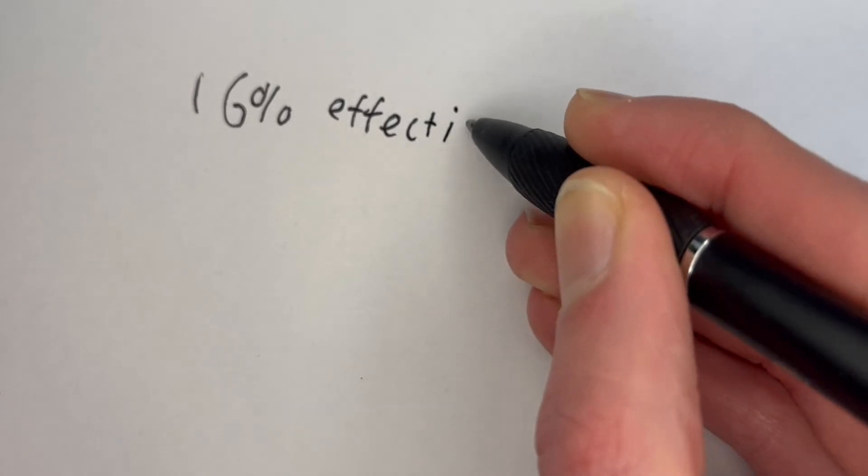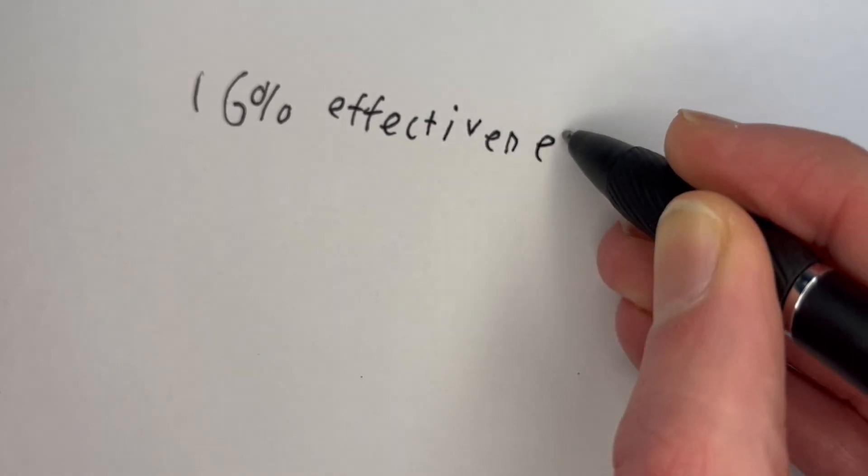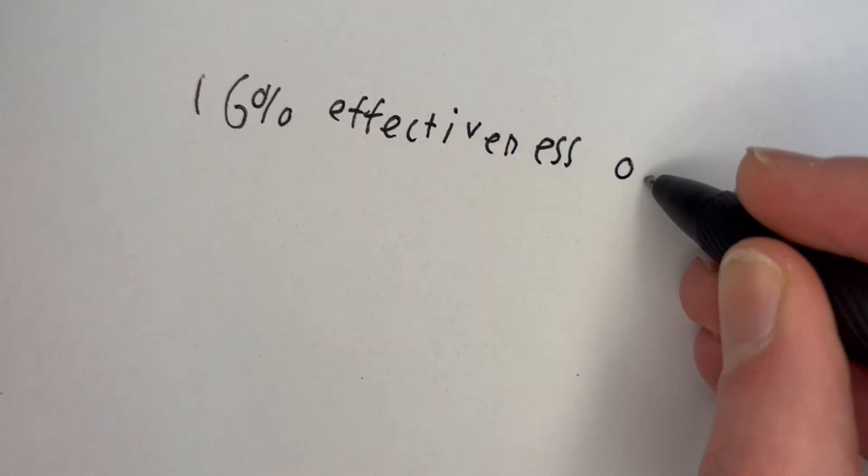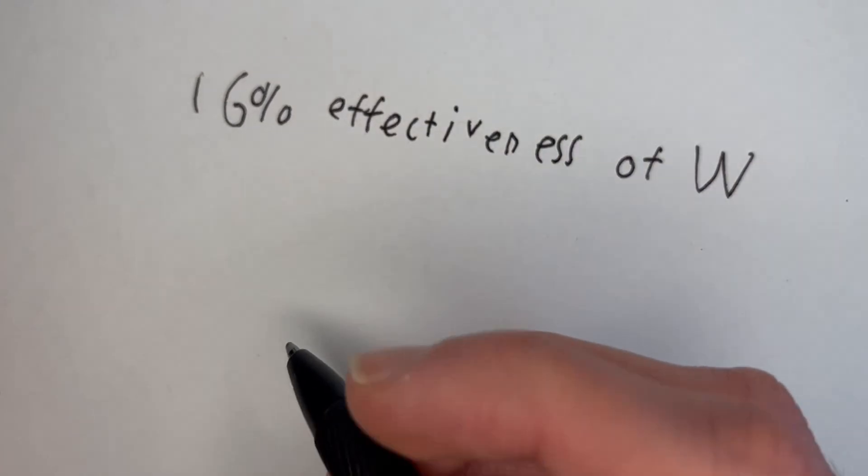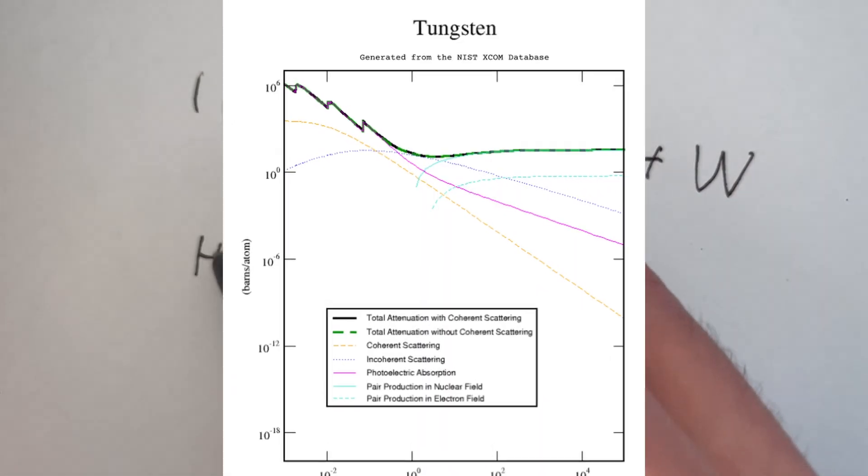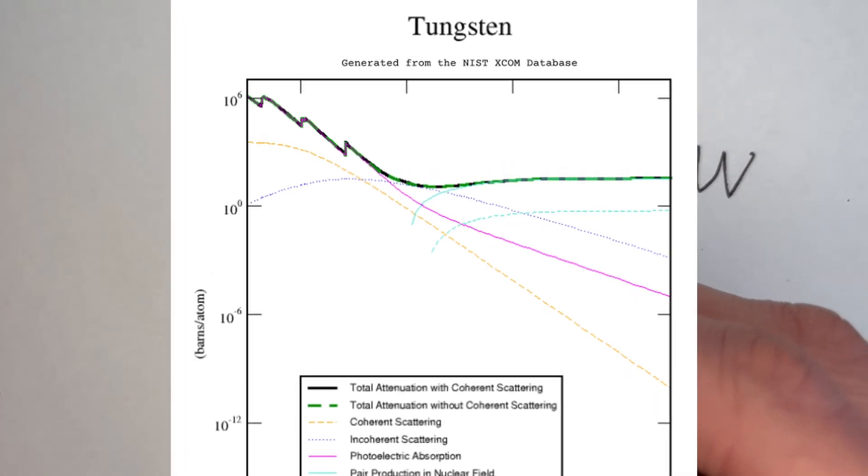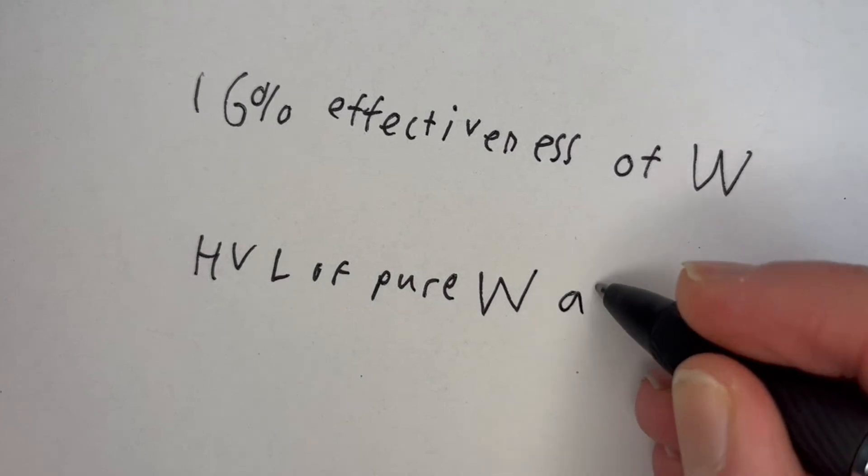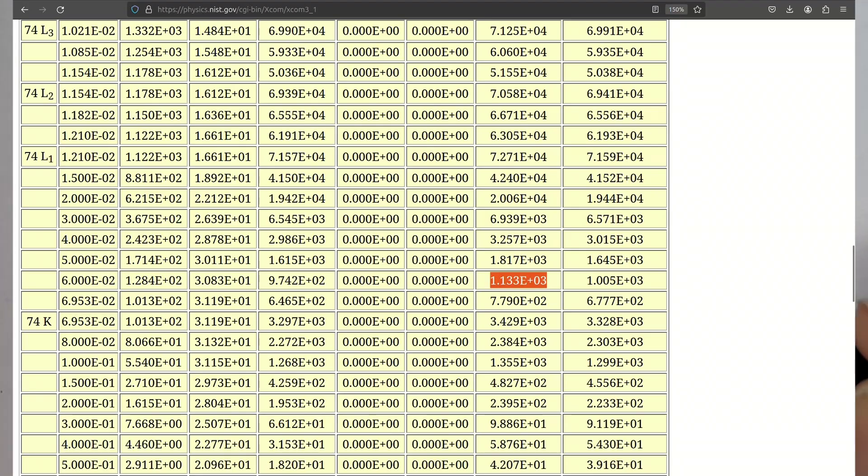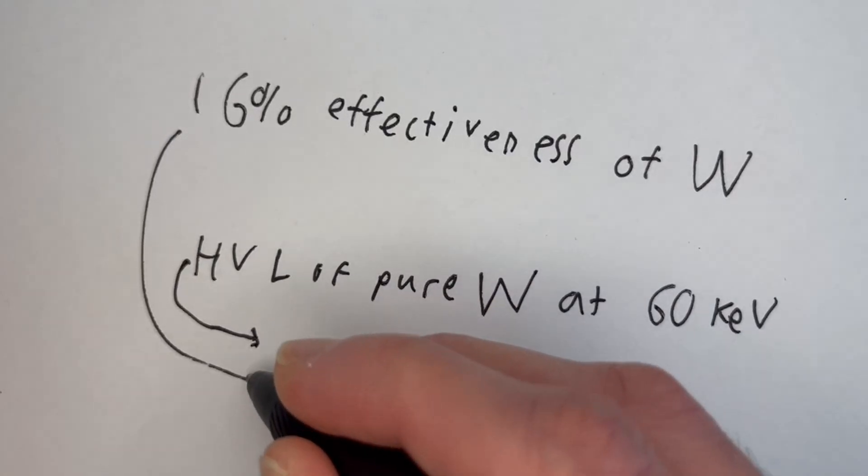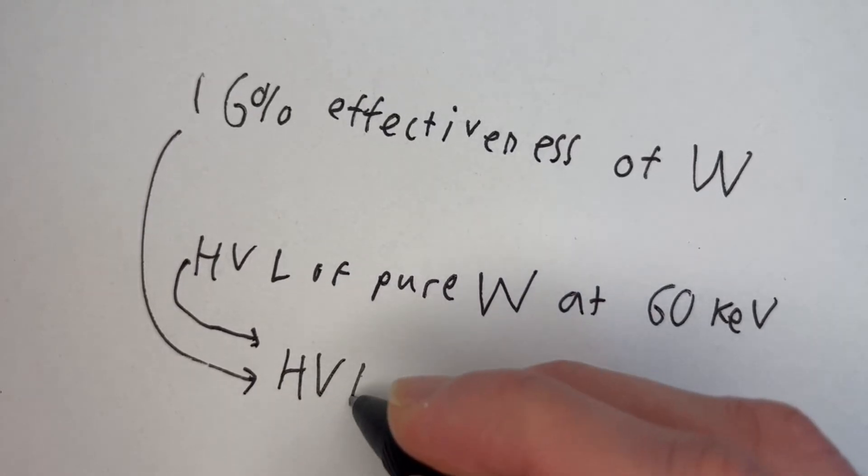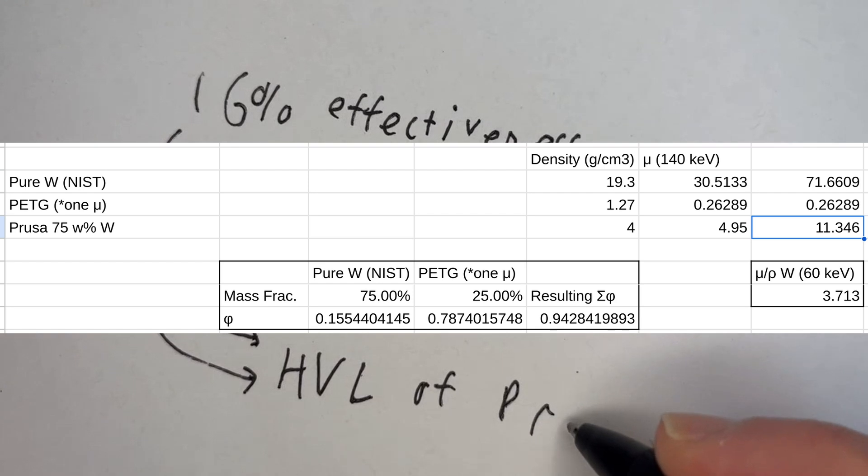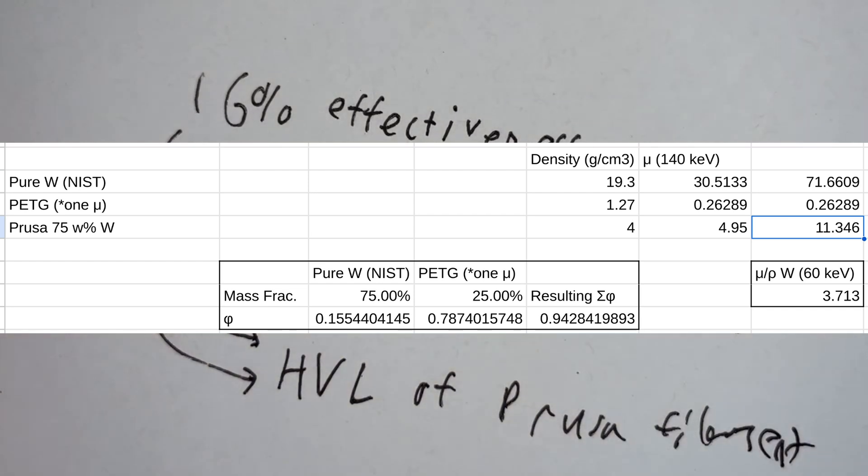The other components do block radiation a little bit but it's not enough to really matter at all. We can use this in conjunction with the fact that you can just look up the half value layer of pure tungsten on the NIST website. They have it at any energy so we can do this at 60 electron volts rather than the 140 that they used. If we put these together we can get a pretty decent estimation of the half value layer of the Prusa filament and that's what I'll use to compare against.